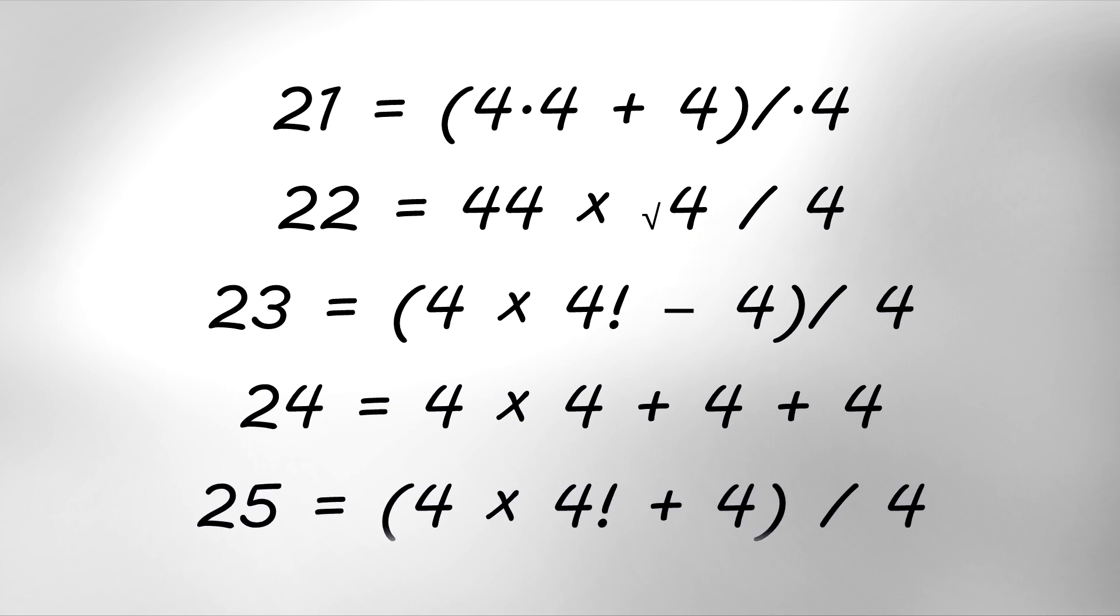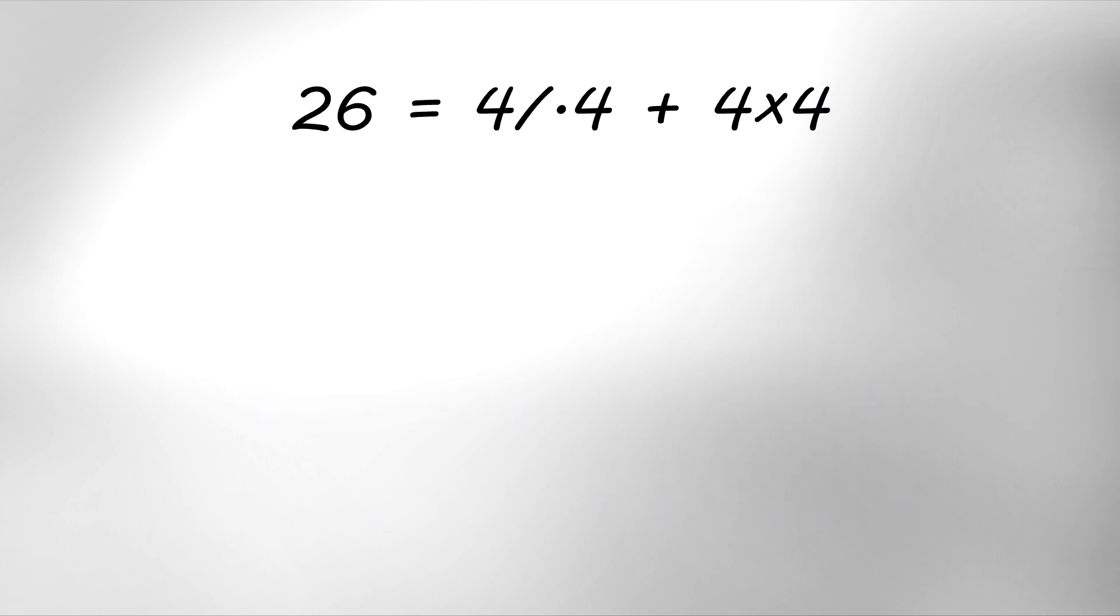25 equals 4 times 4 factorial, plus 4, over 4. 26 equals 4 divided by 0.4, plus 4 times 4. 27 equals 4 minus 4 over 4, plus 4 factorial.